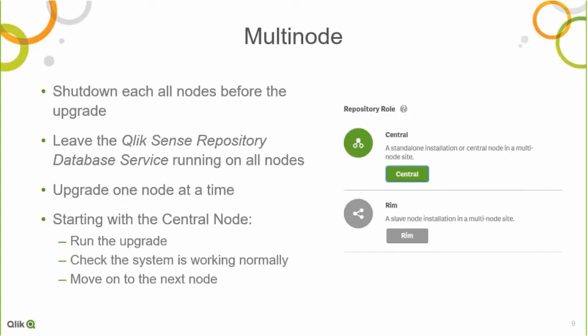Then you upgrade each node one at a time, starting with the central node. You run the upgrade, then check that everything is running once you bring up the central node — no problems with app migrations or services that won't come up. Then you move to a rim node, upgrade it, check it's working, and continue. It takes a while because you're not doing this in parallel, but it simplifies troubleshooting. The last thing you want is to find everything has stopped working and you're not sure at what point things failed or how cleanly you can roll things back.